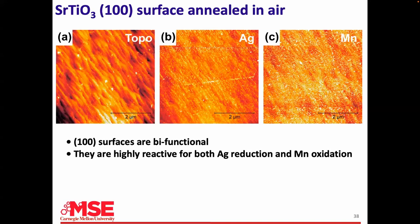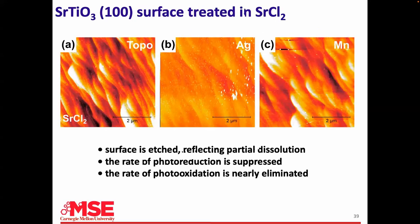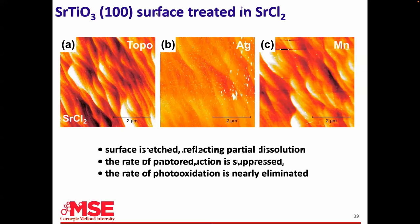We can do similar experiments on the cathodic 1,0,0 surface. Before the salt treatment it is bifunctional — it will both reduce and oxidize. Once we put it in the salt, it suppresses the photoreduction somewhat, but completely eliminates the photo-oxidation. In other words, it was bifunctional before; once it's in the salt, we've shut off the oxidation reaction. That's really key — because even though reduction is decreased a little, as long as it can still do it, the reduction is easier. But making it impossible to oxidize is what will separate the charges.